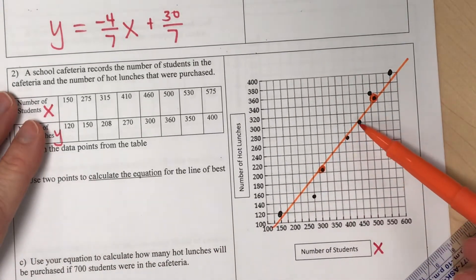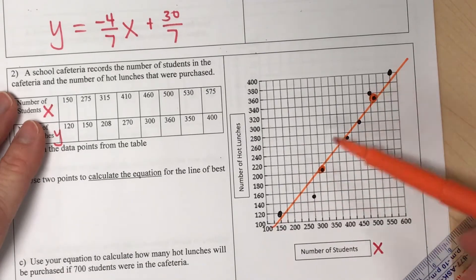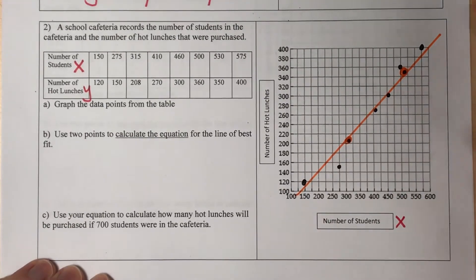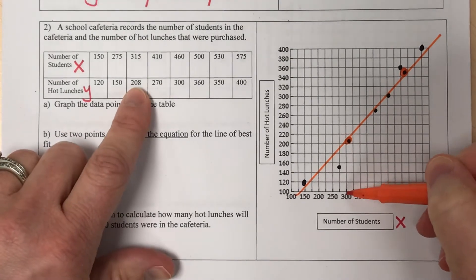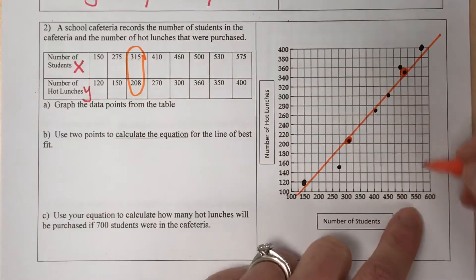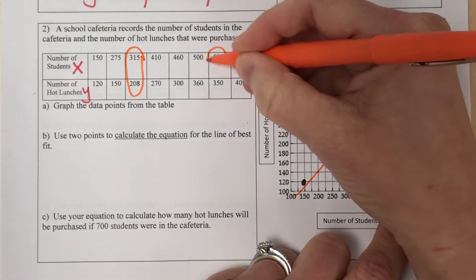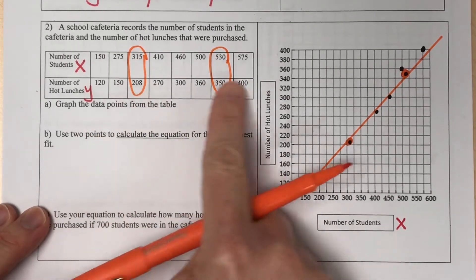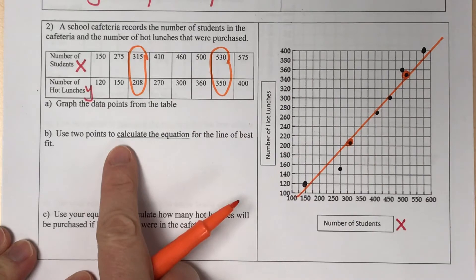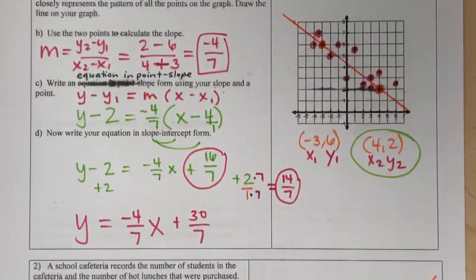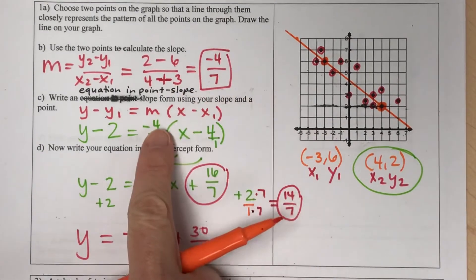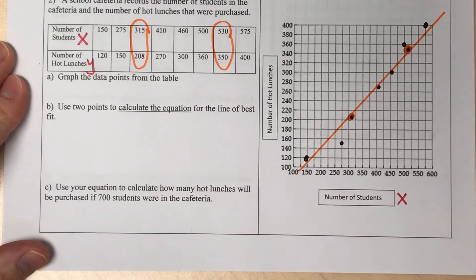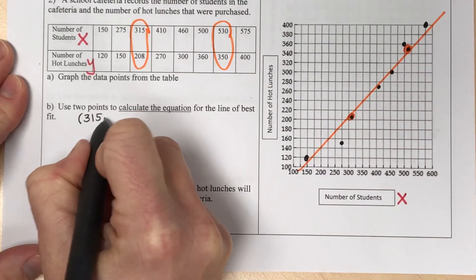Connecting the two points I selected, it looks like roughly one, two, maybe three points below the line and one, two, roughly three points above — that's a decent balance. Now I'm going to identify the two points I selected: the one a little more than 300 on the x-axis and the one a little more than 500. I'll use these to calculate the equation of the line of best fit using the same three steps: find slope, write point-slope form, transform to slope-intercept.